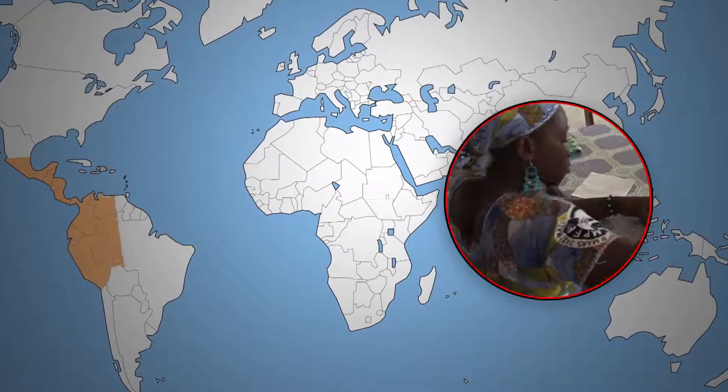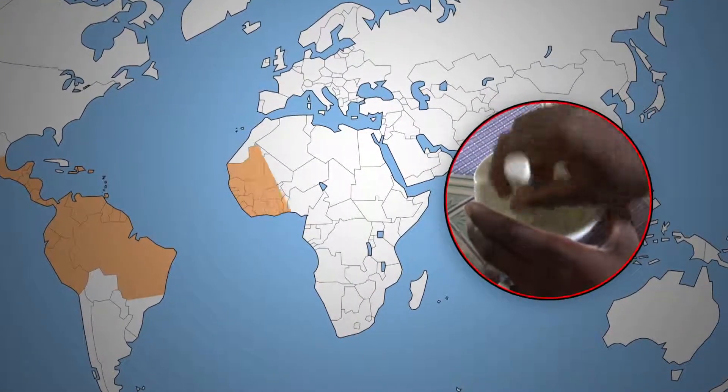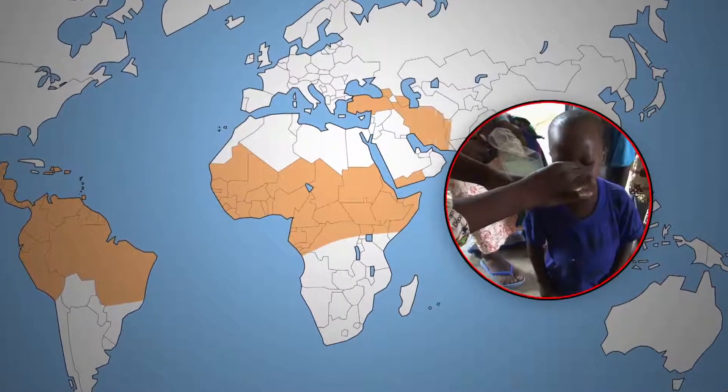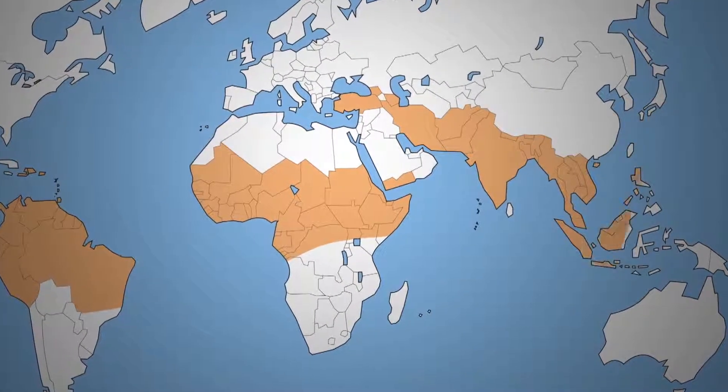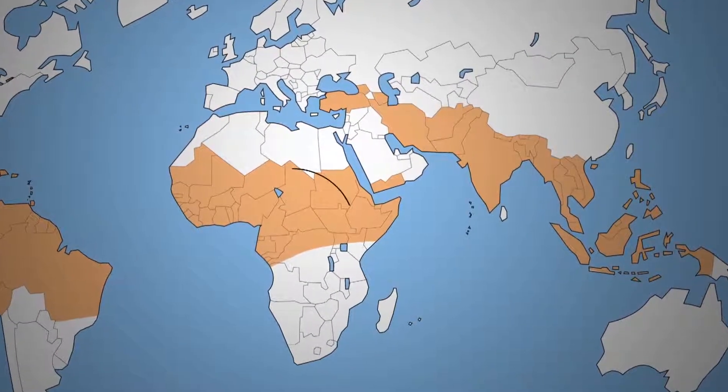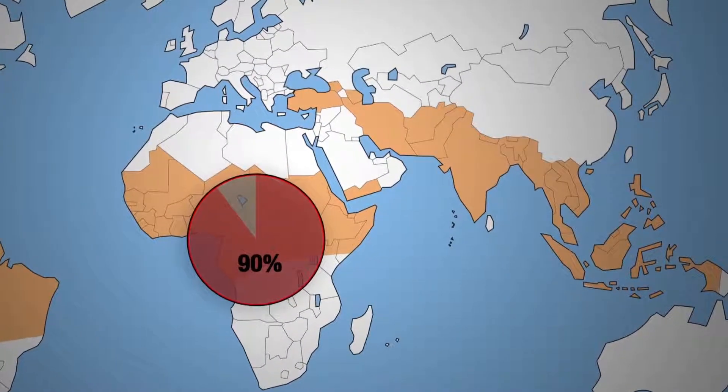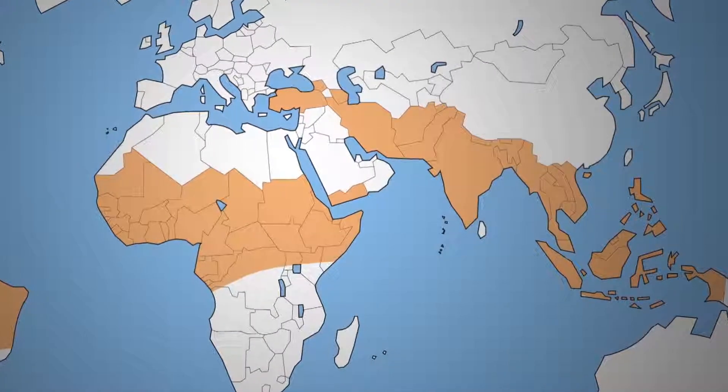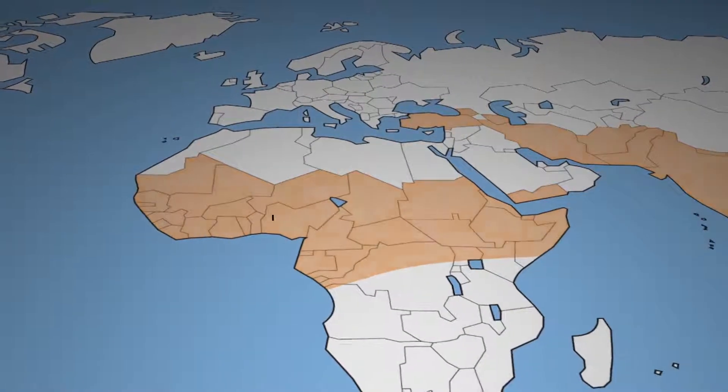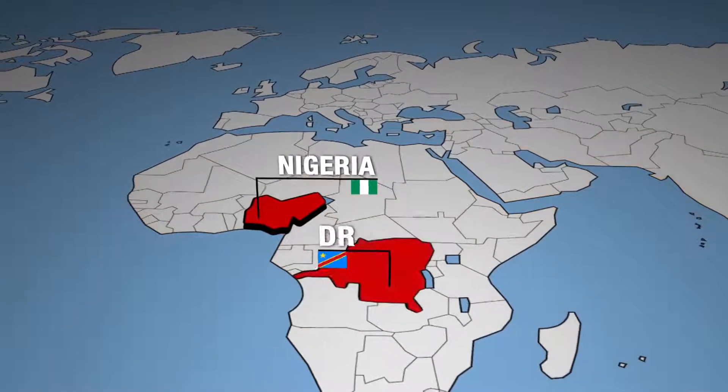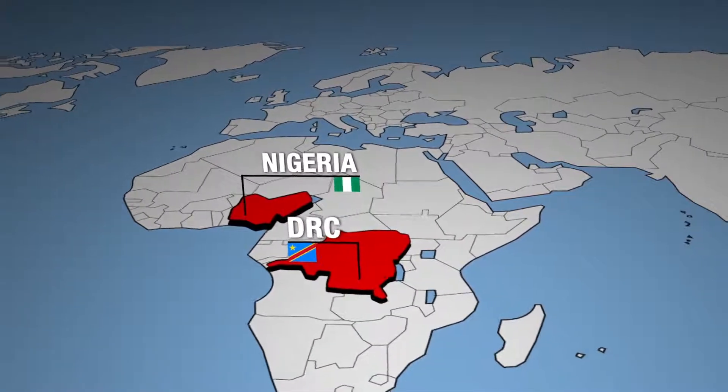Malaria affects around 100 countries, particularly those in tropical zones. Africa alone accounts for 90% of malaria cases, far more than Asia and the Near and Middle East. With over 20 million cases between them, Nigeria and Democratic Republic of Congo pay the heaviest price.